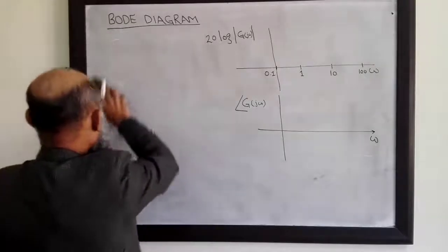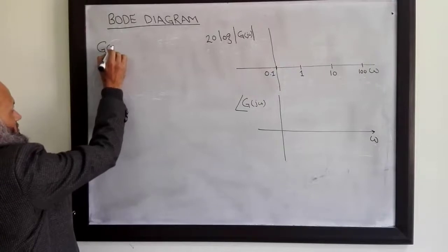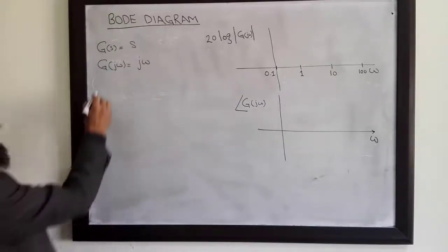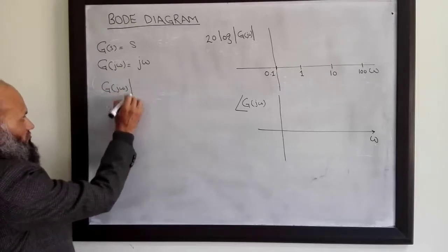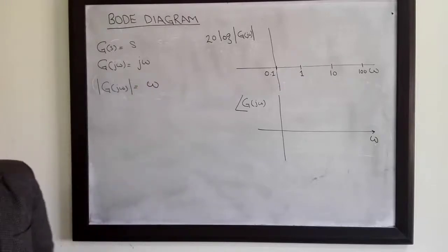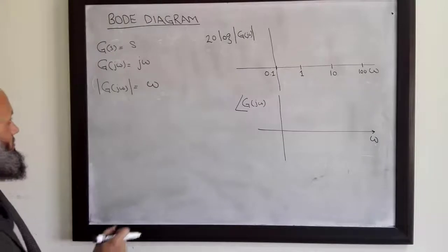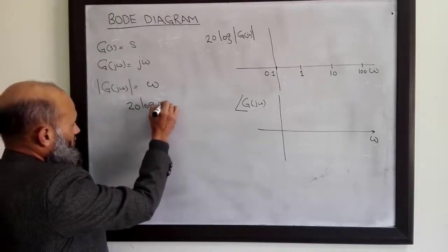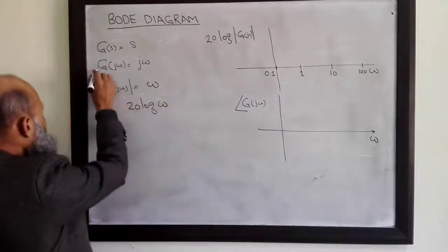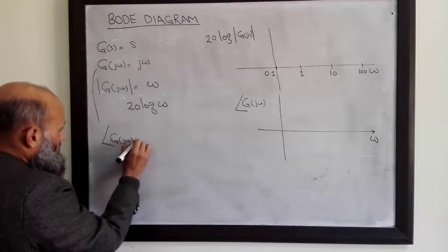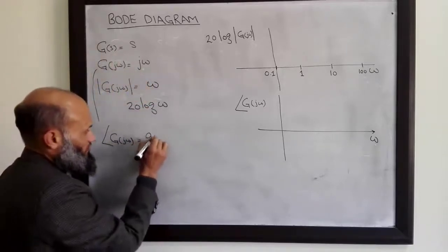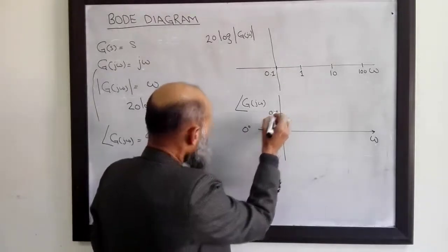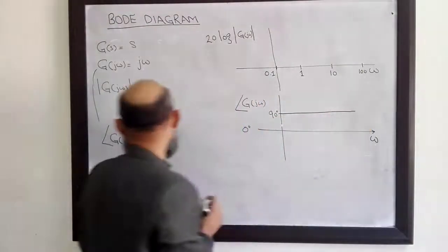Let us start with the simple transfer function G(s) = s. So G(jω) = jω. The magnitude of this complex number G(jω) is simply equal to omega, and if we represent this magnitude in dB's, then it is 20 log(ω). The phase angle of this complex number G(jω) always has a phase angle of 90 degrees, so the phase plot is simple — for all frequencies the phase angle is 90 degrees.